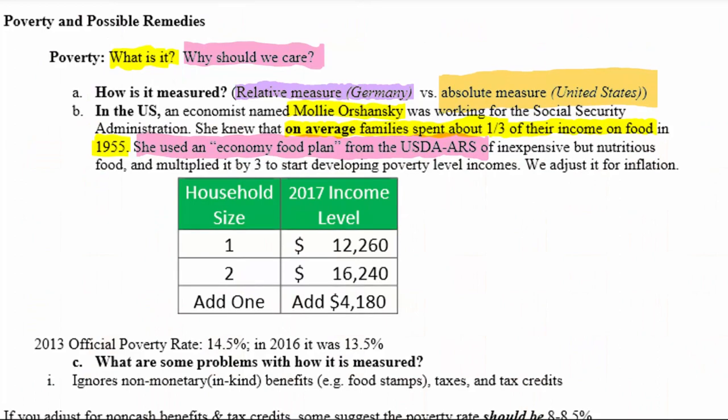Once Molly Orshansky figured out how much a family could spend on low-cost yet nutritious food, she calculated that amount and then multiplied it by three to develop an income level below which people could be considered to be living in poverty. Since then, we basically adjust these numbers for inflation. She completed this work around 1960 or 1961.